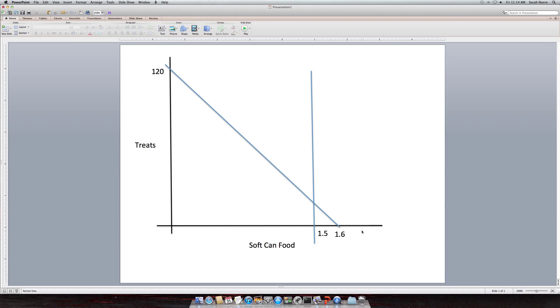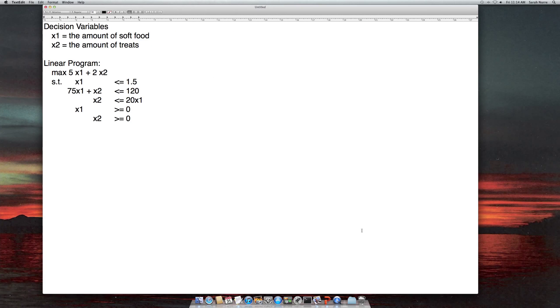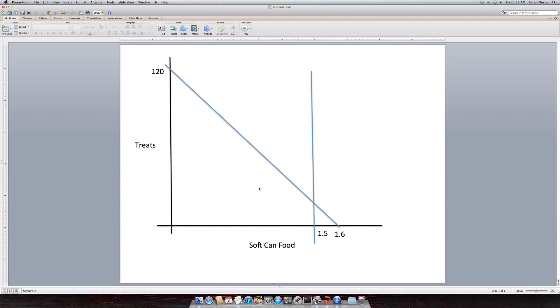And so now we're going to go on to the next constraint. We have x2 is less than or equal to 20x1, and so this is in traditional slope intercept form. So if you think like x equals y. So we're going to say if x1 equaled 1 we would have about 20. If it equaled 1.5 we would have about 30. And so we're going to draw that line here as best as possible. So this actually crosses at zero. And so if you draw like I do it's not necessarily to scale, it's just the point of it is to get the idea of the general shape.